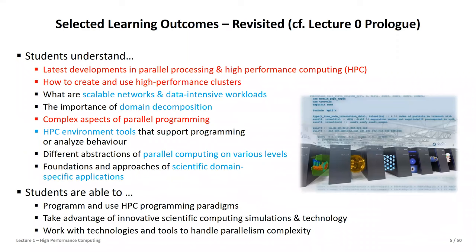The learning outcomes: we deal with the latest developments in parallel processing and HPC. At a moderate level, we won't go into deep MPI programming, but you'll understand the complexity of parallel programming — what it means when you cannot access memory, how you deal with it via message passing and distributed memory, and what kind of architecture creates an HPC machine. You'll also understand how HPC clusters are built from smaller parts like racks, node cards, bringing many chips together.